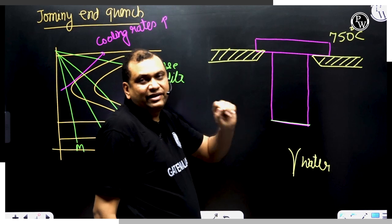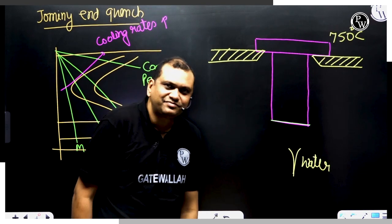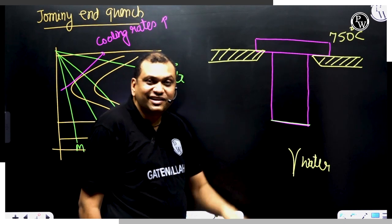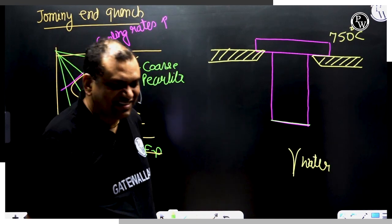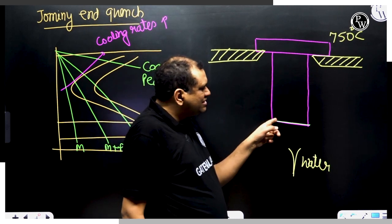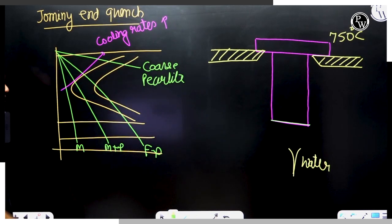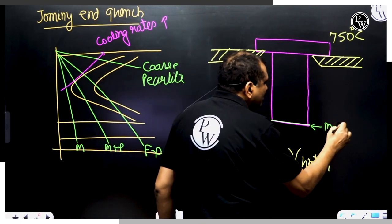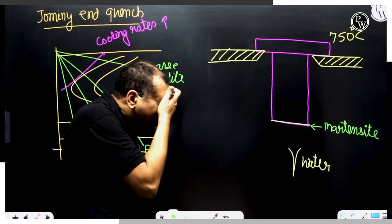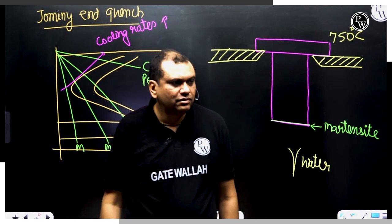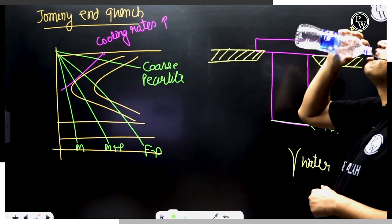This bottom layer is coming in contact with the cold water, so this layer will experience a higher cooling rate. Because this surface is in direct contact with water, the cooling rate will be high, and with a higher cooling rate you will get martensite on this surface.